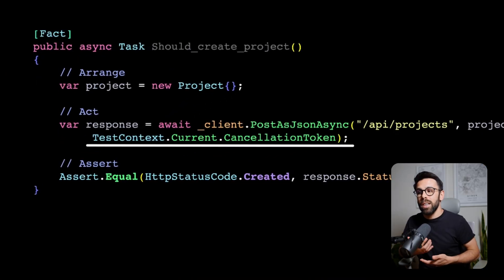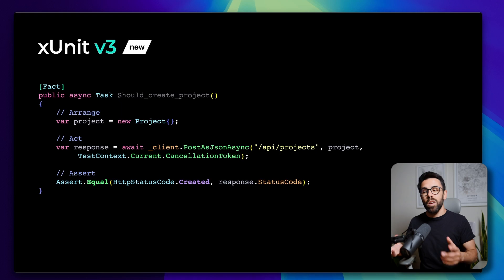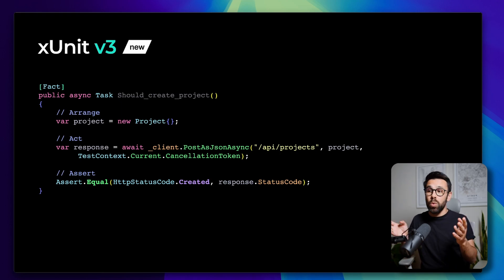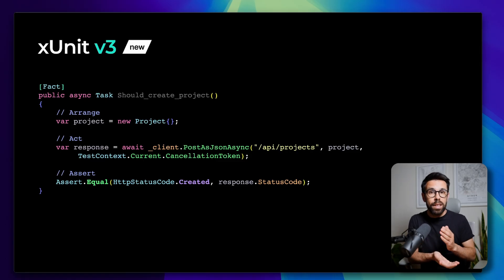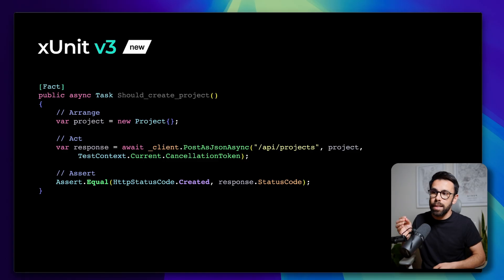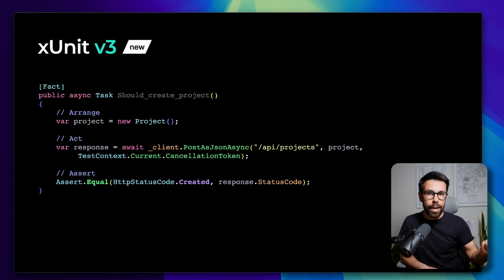Now you can access the test context and you will have the cancellation token there. Every single time that you were providing the default, now you can replace that with TestContext.Current.CancellationToken. What's the advantage? If you stop your tests while they are running — you stop them, cancel them, abort them — it will trigger the cancellation token in all the code that is being used. And since it's behind an async task, it's likely using resources that you want to protect. So it's a great idea to use the cancellation token.